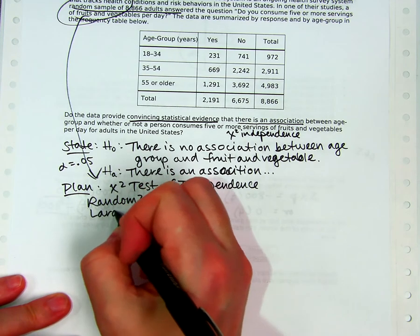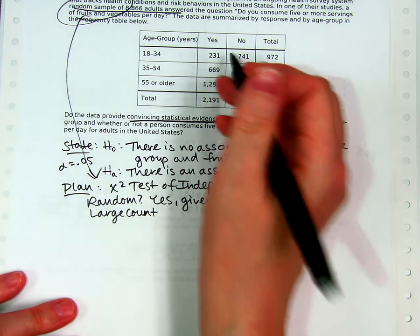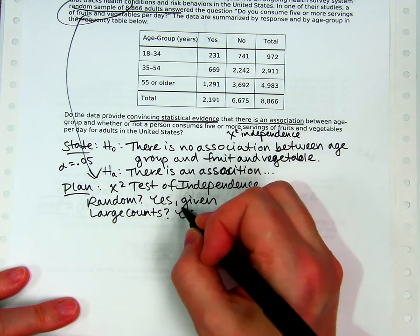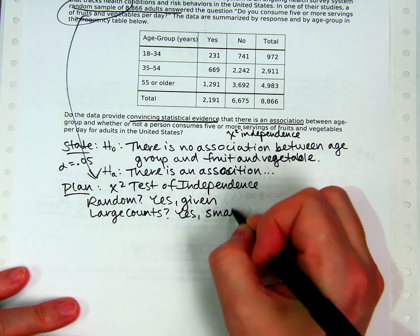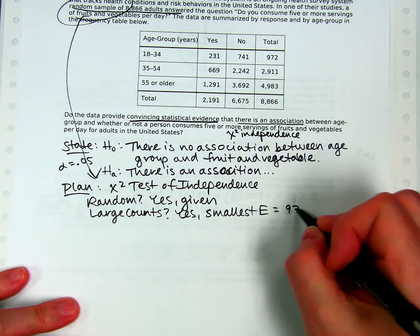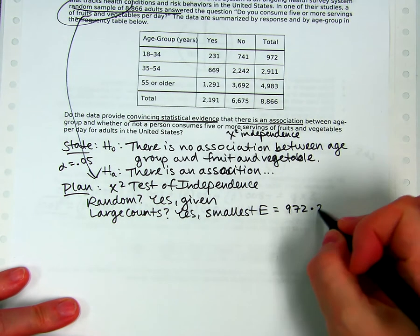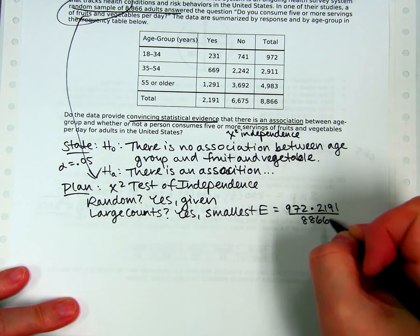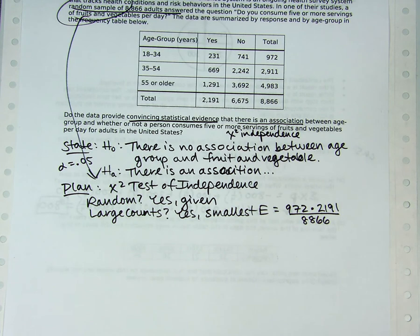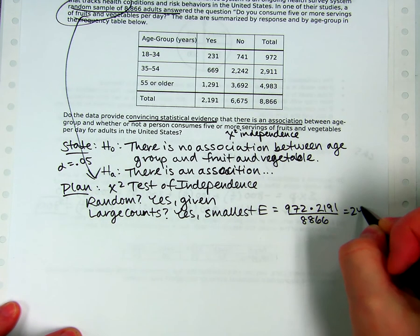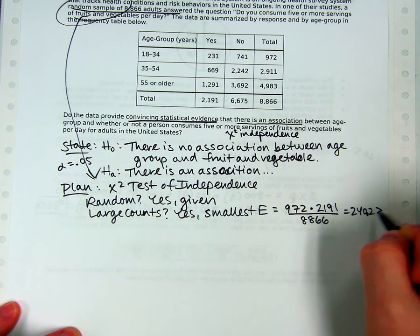Large counts. Remember we have to check the expected counts. They look to me like they're going to be huge, but I'm just going to make sure by doing the smallest one. So I'm just going to say yes, I know it's going to be true. But the smallest E. Let's prove it. Smallest E is, remember it's the smallest of the row totals, 972 times the smallest of the column totals, divided by the grand total. And I'll figure out what that is, but I know it's going to be bigger than five. No problem.